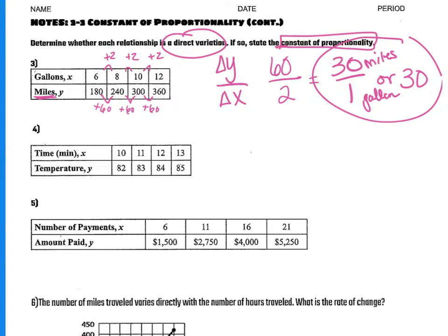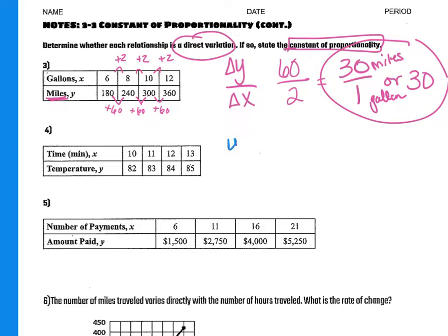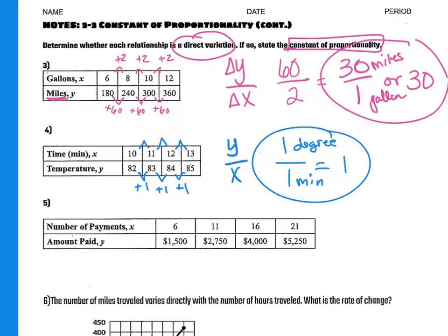Then on number 4. On number 4, same thing. I want my y, the change in y to go on top, change in x to go on the bottom. My change in y, my temperature is going up just 1 degree each time. 82 to 83, 84 to 85. So my change in y is 1. Then my change in x, 10 to 11, 11 to 12, also going up by 1. So the answer would be 1. And what that means is it's like changing 1 degree every minute. So the temperature is rising 1 degree every minute.